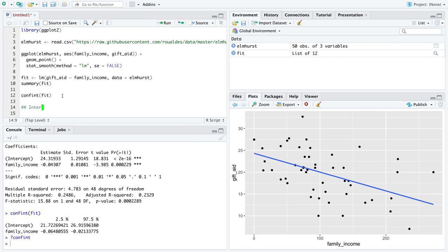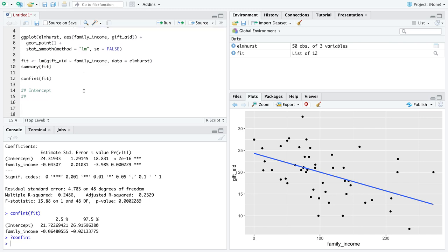So let's work on interpreting the intercept first. What we have to do here is blend together our standard interpretation of a confidence interval with our standard interpretation of an intercept. So we'll start. We are 95% confident that when, now here comes the interpretation of an intercept, family income is $0.